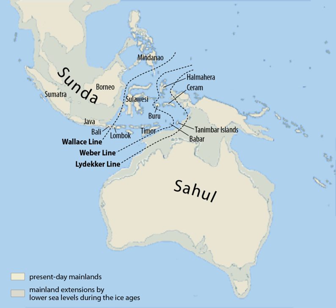Island area and number of terrestrial mammal species are positively correlated, with the largest islands of Sundaland having the highest diversity.